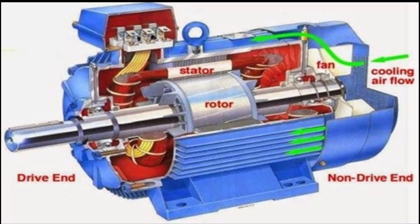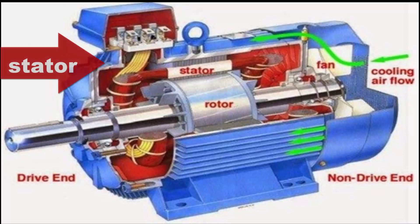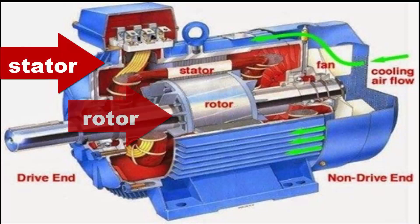It consists of two magnetic circuits which are interlinked with each other, placed in two main parts of the machine: the stationary part and the moving part. The stationary part is called the stator and the moving part is called the rotor.